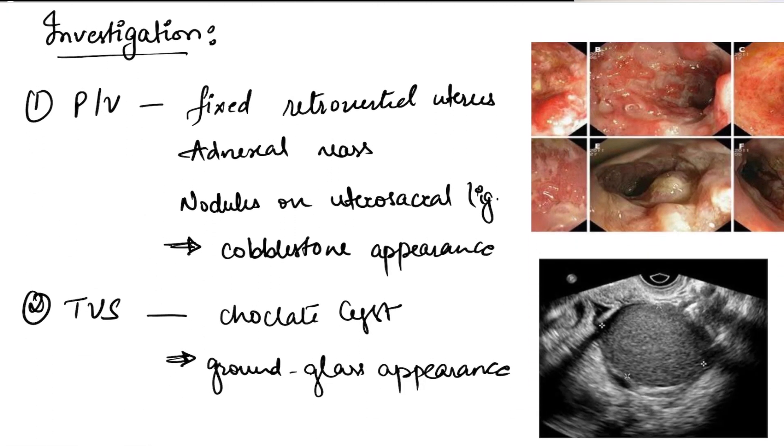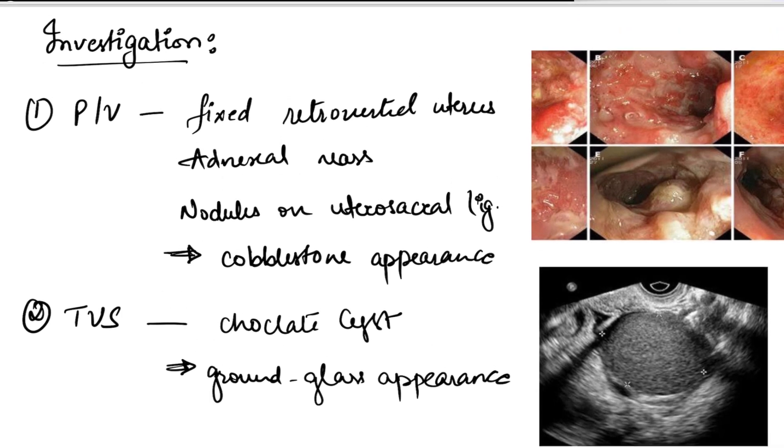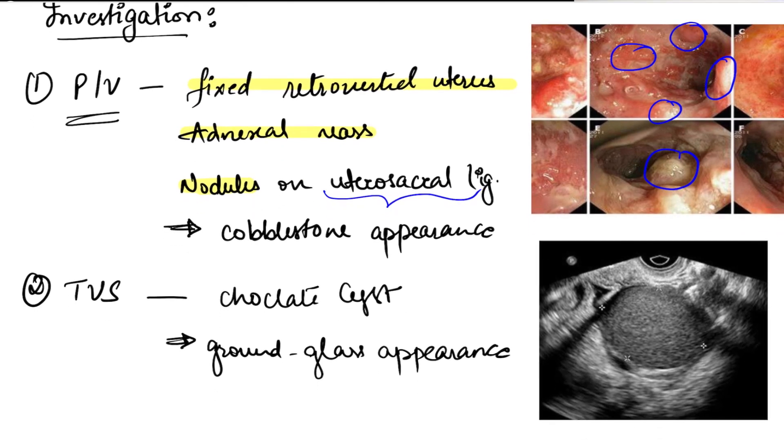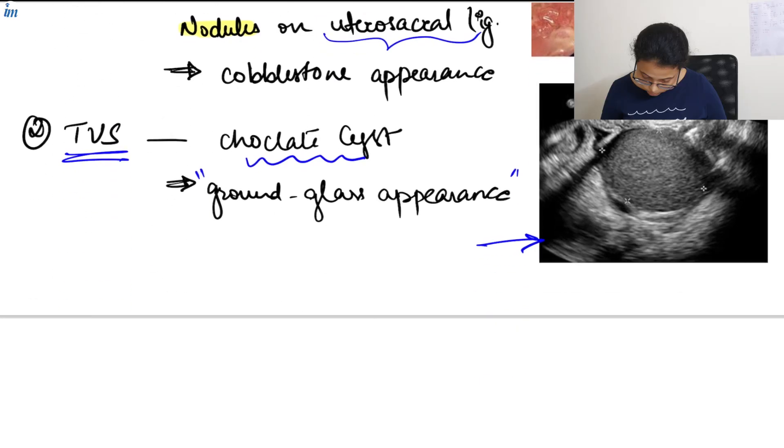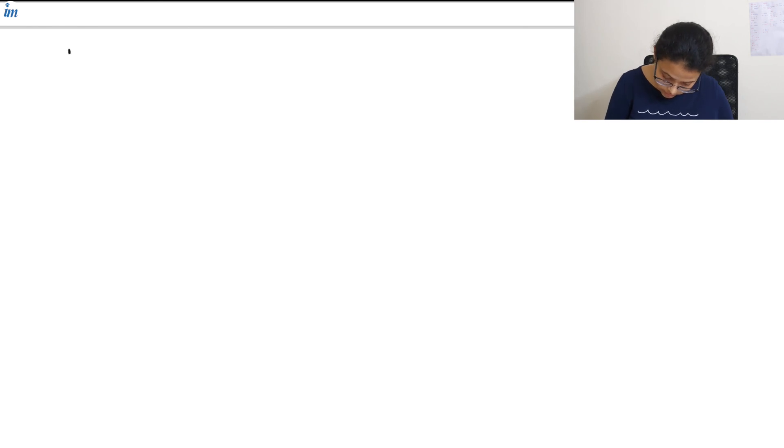Now let's see the investigation. For the investigation we have per vaginal examination. In PV we'll see the fixed retroverted uterus, adnexal mass, and nodules on the uterosacral ligament. Now these nodules on the uterosacral ligament gives cobblestone appearance as you can see in this picture. These are the nodules, this bumpy appearance on the uterosacral ligament gives cobblestone appearance. Then under investigation we have transvaginal sonography. In this we can see the chocolate cyst and it gives ground glass appearance as you can see in this picture.